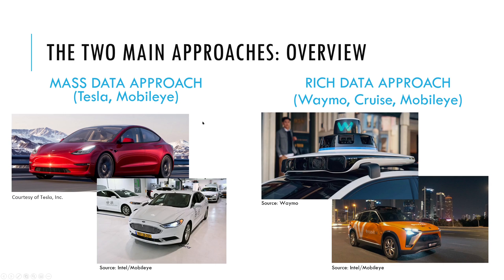As I see it, there are two main approaches to reach self-driving cars. By self-driving car I mean that you're sitting in the back seat with no one in the front seat driving, and the car has to be able to stop on its own at the side of the road or go to a safe parking slot if there is a problem. The first approach is a mass data approach, which Tesla and Mobileye are using.